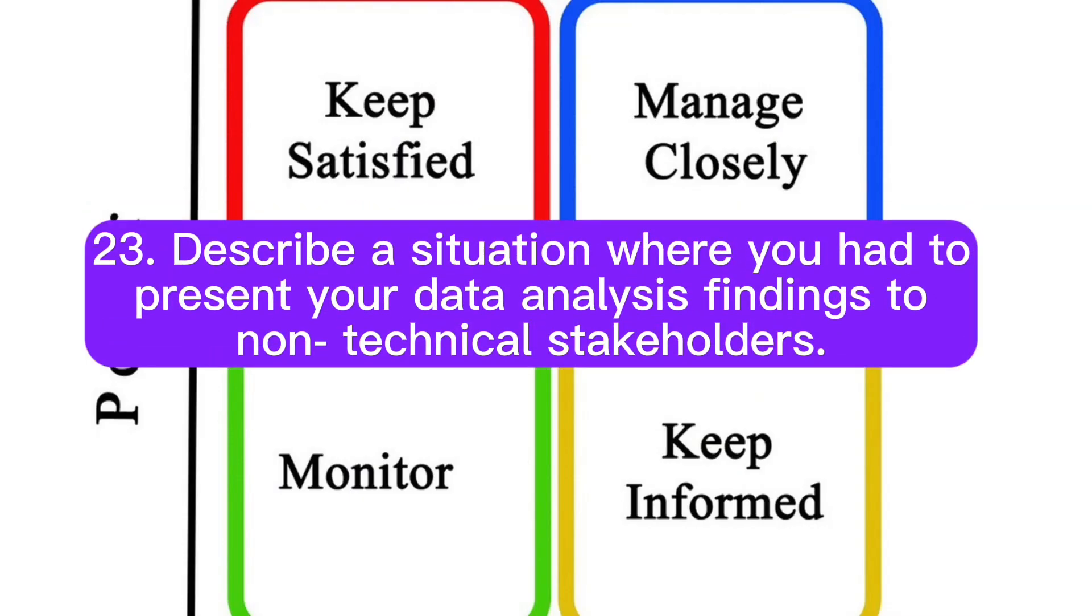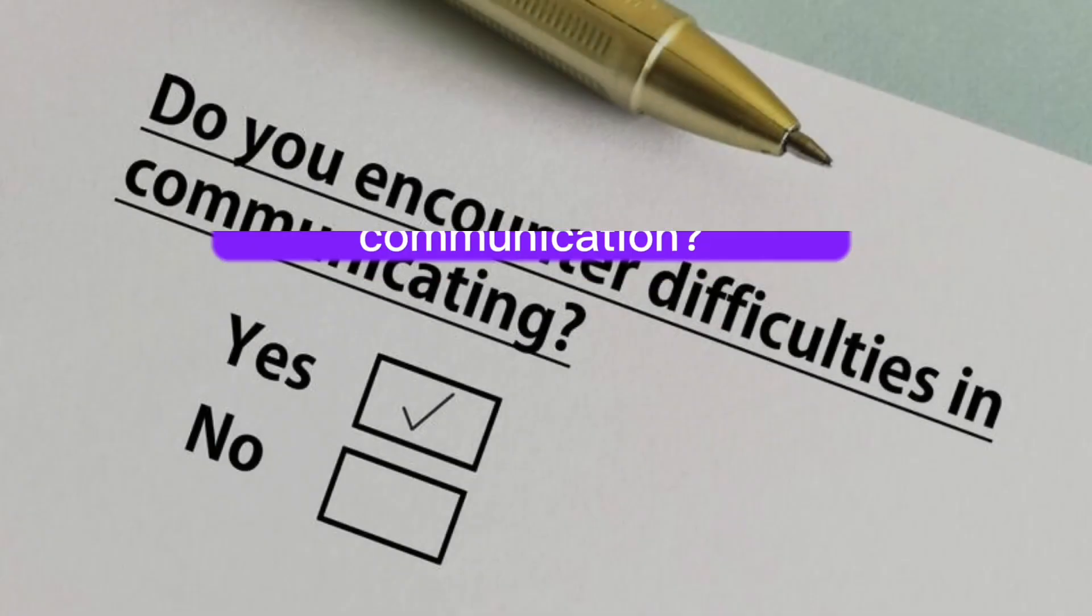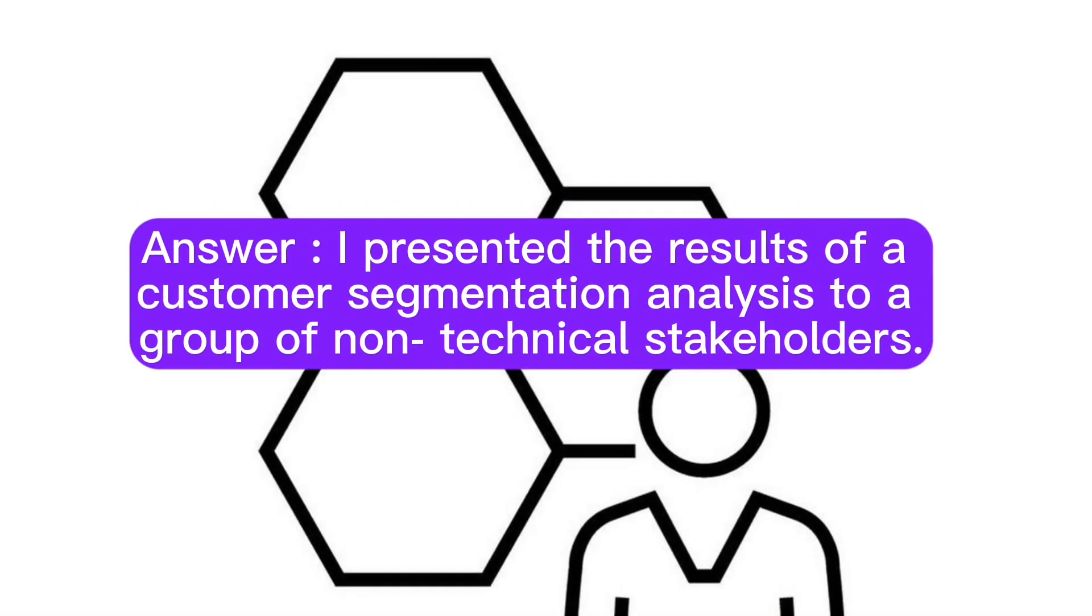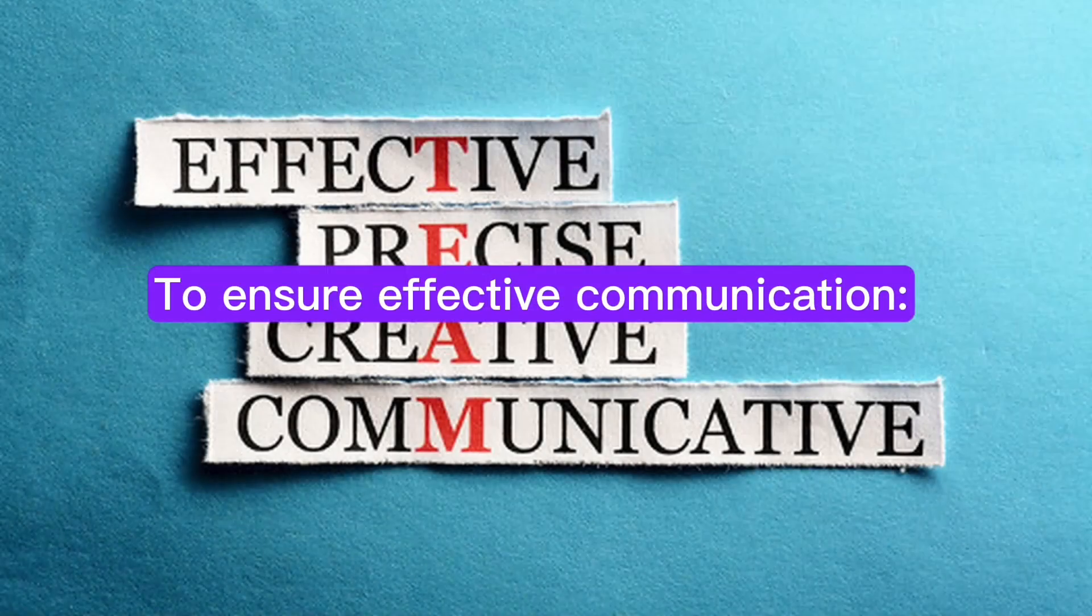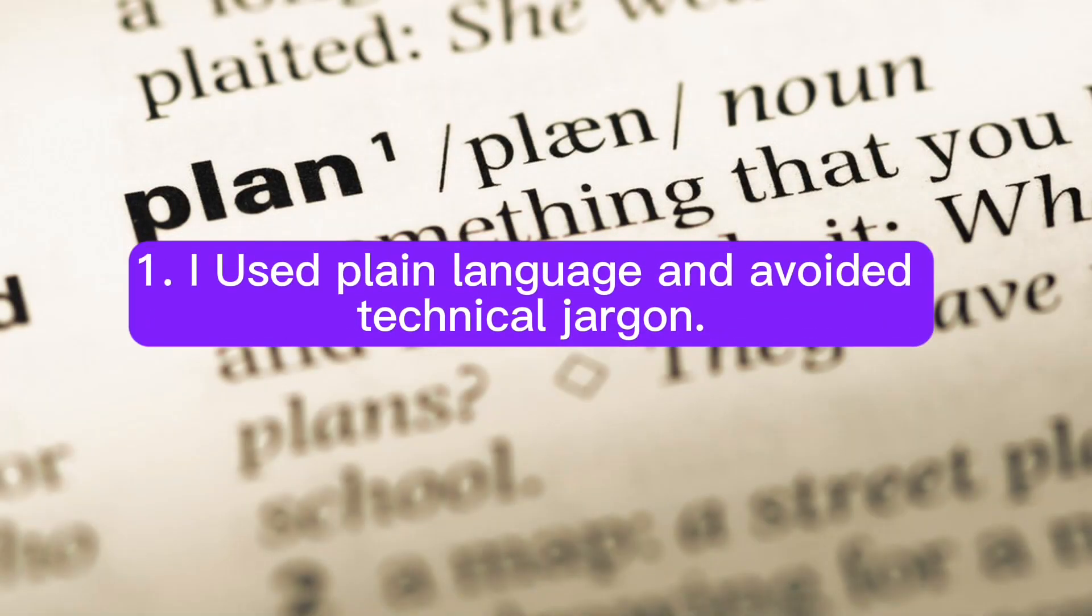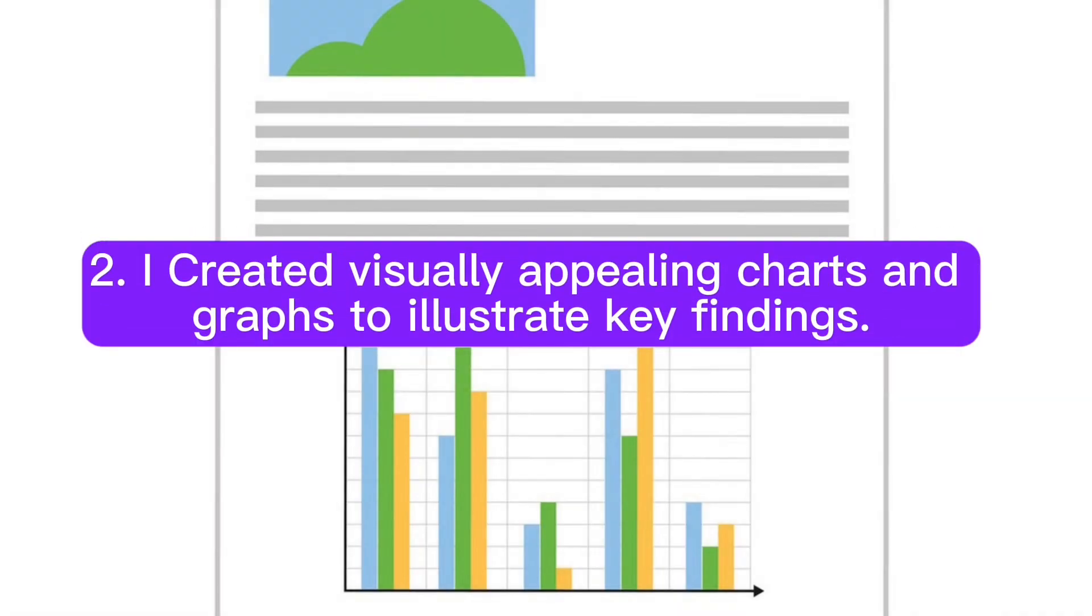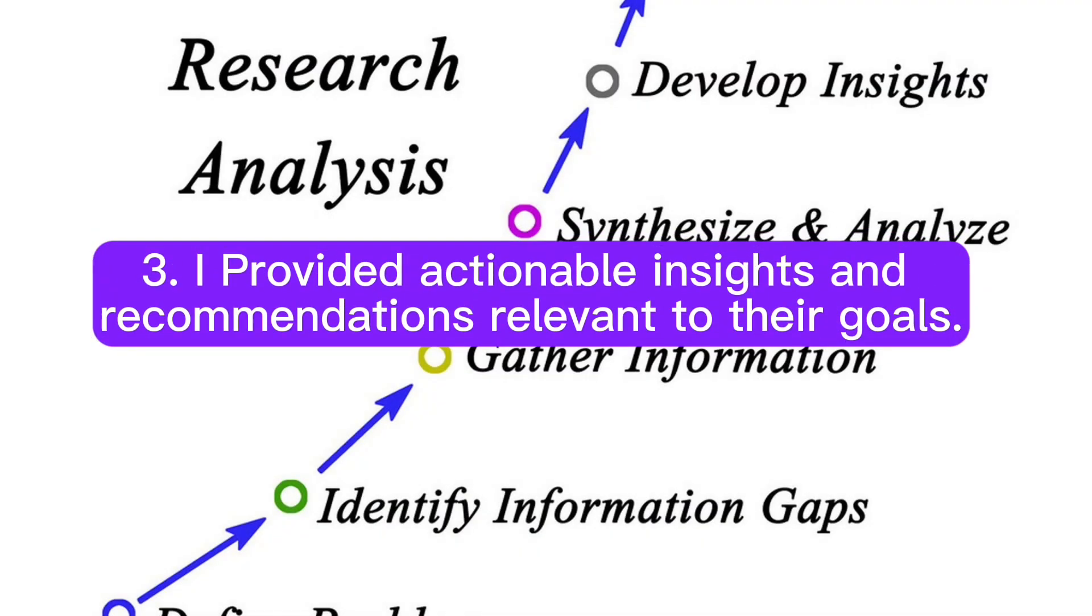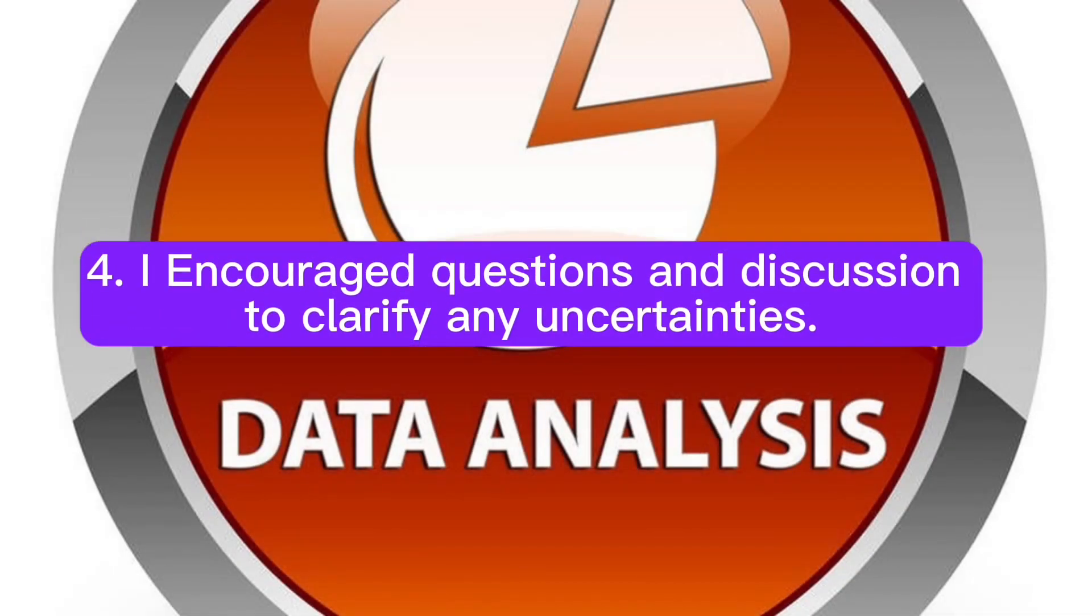Question 23: Describe a situation where you had to present your data analysis findings to non-technical stakeholders. How did you ensure effective communication? Answer: I presented the results of a customer segmentation analysis to a group of non-technical stakeholders. To ensure effective communication: first, I used plain language and avoided technical jargon; second, I created visually appealing charts and graphs to illustrate key findings; third, I provided actionable insights and recommendations relevant to their goals; and fourth, I encouraged questions and discussion to clarify any uncertainties.